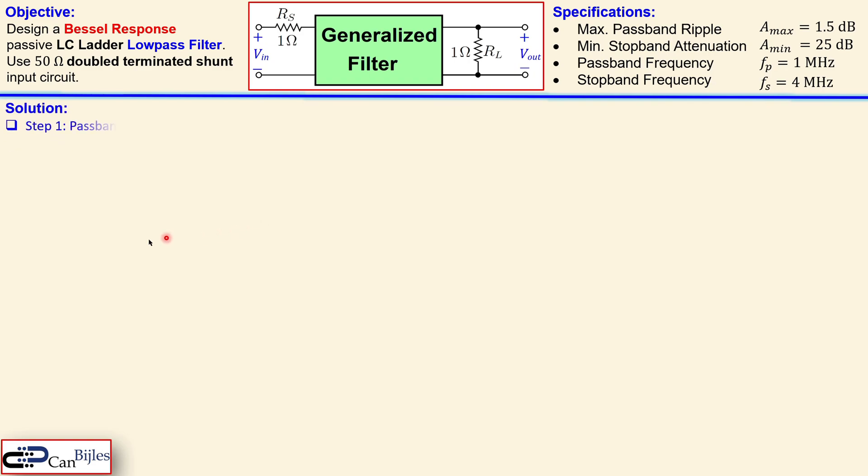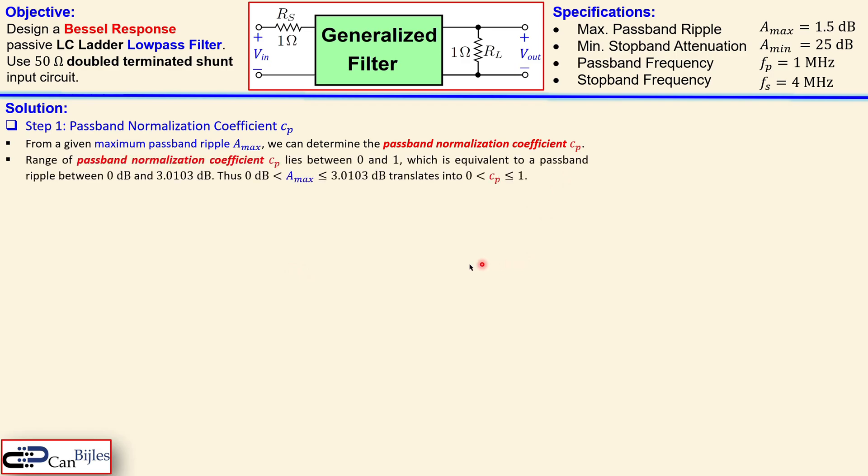So the solution step by step. First step one is the passband normalization coefficient CP. So that is determined from the given a_max. For a given maximum passband ripple a_max we can then relate this to the CP which is our passband normalization coefficient. The range of this coefficient lies between 0 and 1 which is actually equivalent to the passband ripple between 0 dB and 3.0103 dB. That means the a_max range can be between 0 dB and approximately 3.01 dB which translates again between 0 and 1.